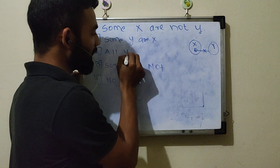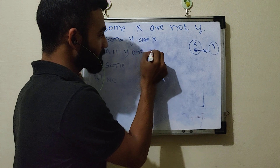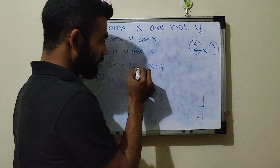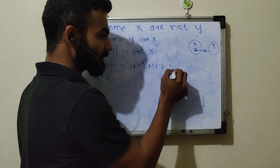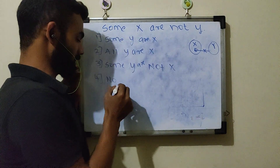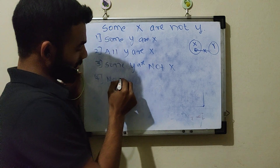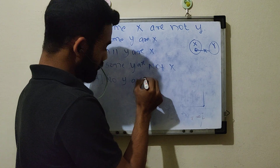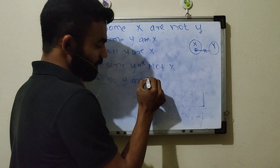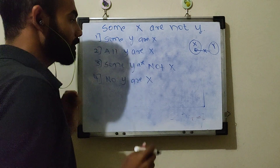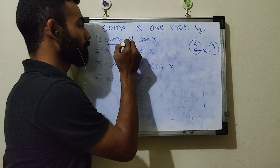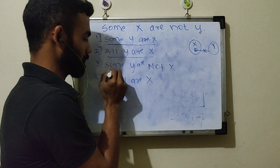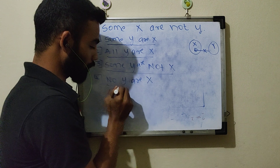Second conclusion: All Y are X. Third conclusion: Some Y are not X. Last conclusion: No Y are X. So if I have all these conclusions, no doubt some of them will be wrong.